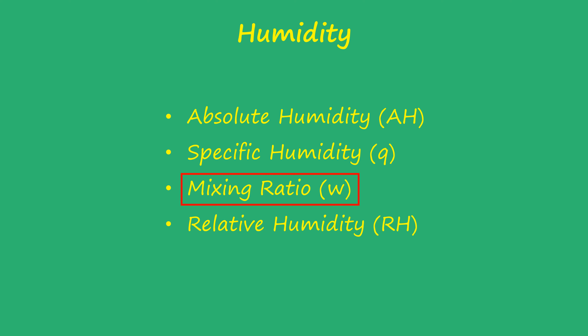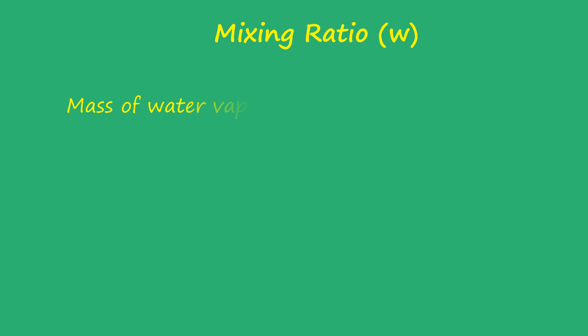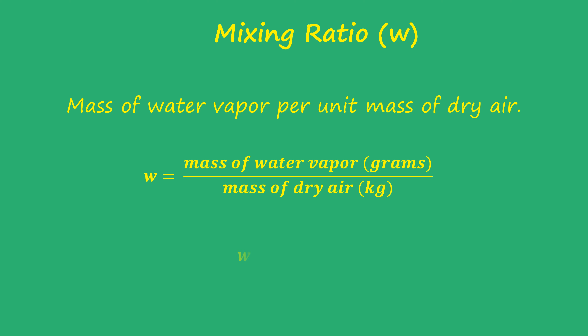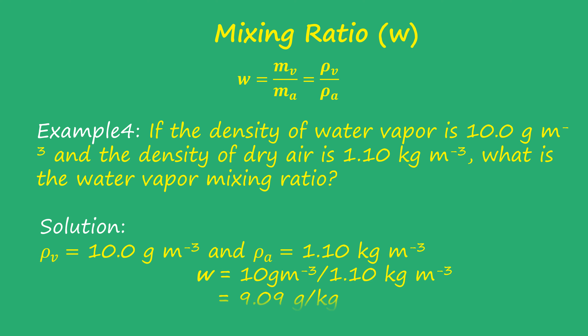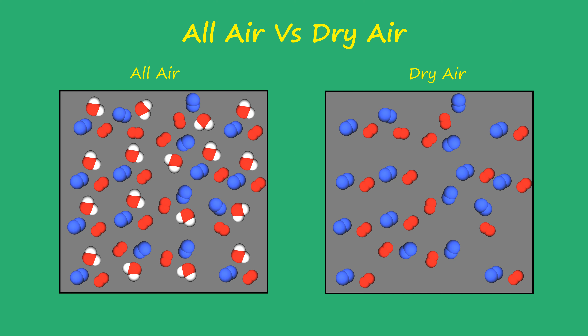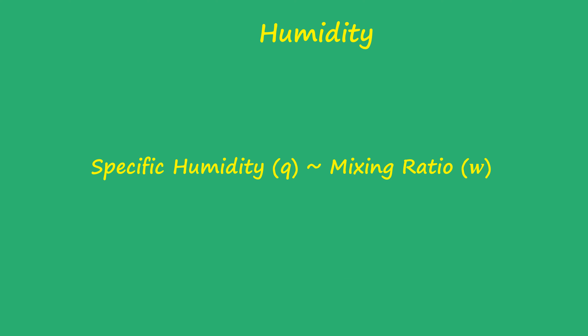This brings us to the definition of mixing ratio W, also called the water vapor mixing ratio. It is defined as the mass of water vapor mixed per unit mass of dry air, and is mathematically written as W = mv/mA = rho_v/rho_A. For example, if the density of water vapor is 10 grams per cubic meter and the density of dry air is 1.1 kilograms per cubic meter, the mixing ratio W is 9.09 grams per kg. Notice this is approximately equal to the specific humidity example solved earlier, because the mass of water vapor in air is always much smaller than the mass of air, meaning 'all air' and 'dry air' have approximately the same mass. Therefore, specific humidity and mixing ratio are equivalent within a few percent.